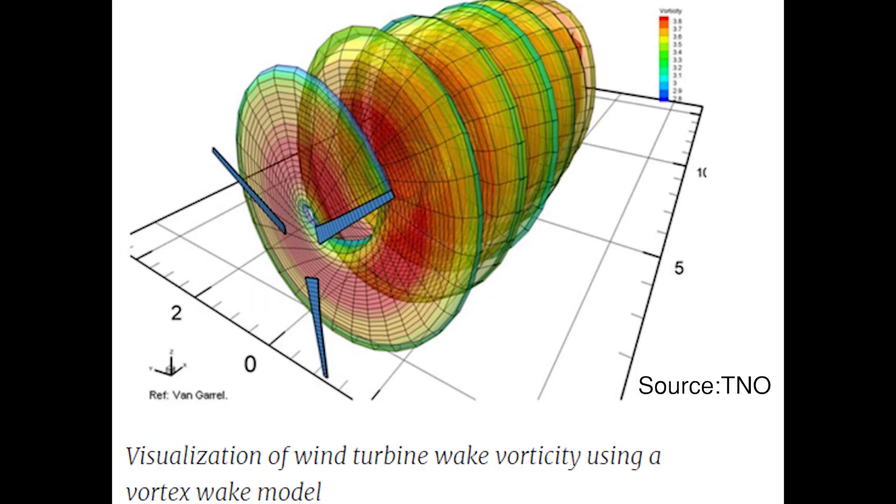Potential flow finds its application in many problems. Take for example lifting line theory, which is a tool used for estimating lift distribution over a three-dimensional wing. Using this theory, we can approximate the complex flow in the wake of a rotating wind turbine.